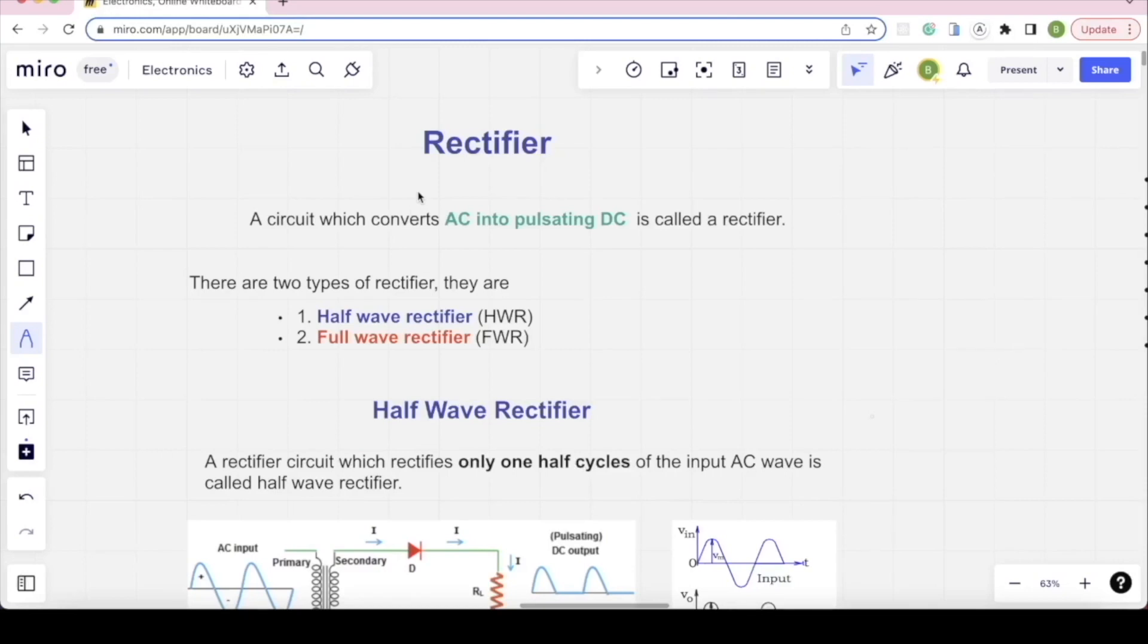Next topic is Rectifier. It is one of the use cases of the diode. Rectifier is the circuit which converts the AC into pulsating DC. When we do AC input, we will convert to DC using the Rectifier. These types are half-wave rectifier and full-wave rectifier.